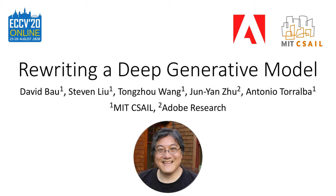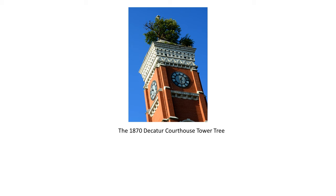In 1870, in Decatur County, Indiana, a very strange sight appeared on the top of a courthouse tower. An aspen tree had sprouted there. The tree's been up there ever since. It's beautiful, and the people of Decatur County love it. It's totally one of a kind. And that makes me think, can we make a generative model to make tree tower images like this?